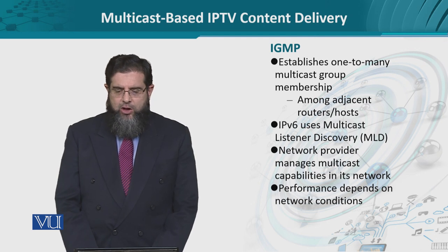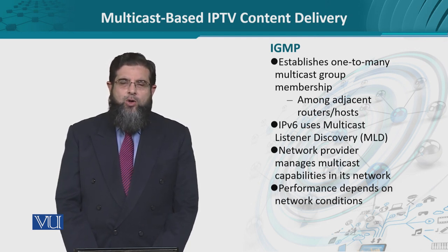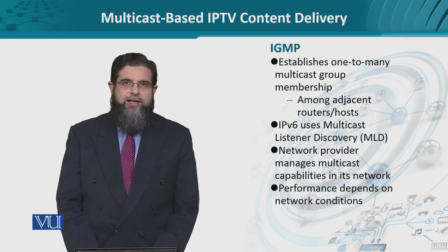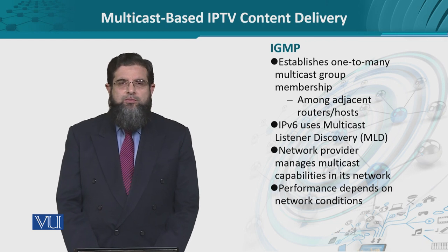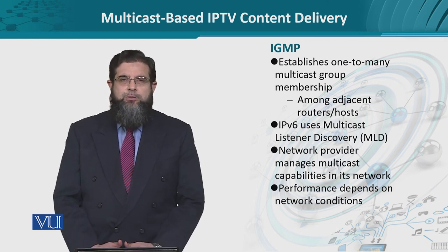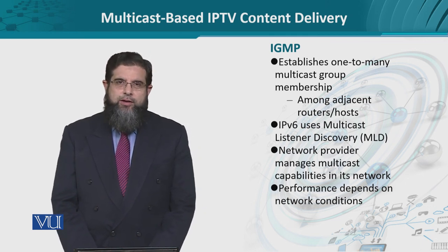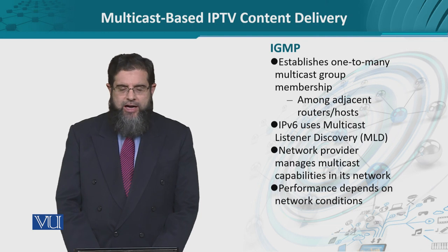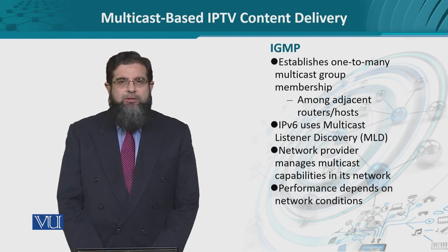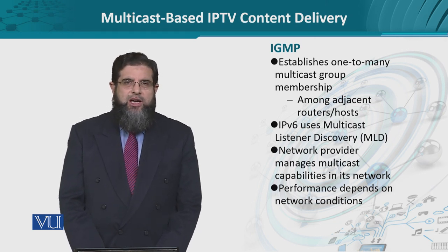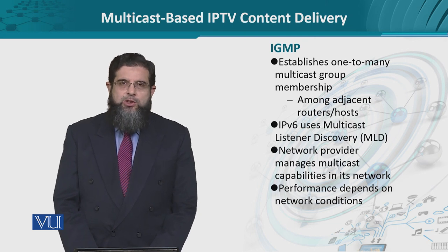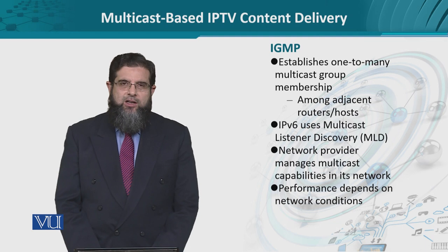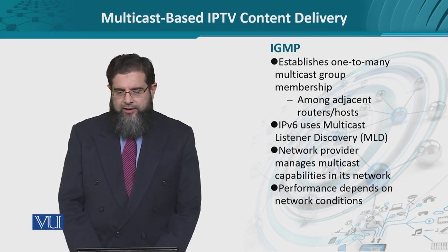IGMP is basically a logical network that overlays on a physical network. This allows membership-based joining of interested users for a certain content into a single group, which could include hosts and routers that are physically spaced apart but form logical adjacency. IPv6 also has an equivalent, since IGMP mostly works for IPv4 — IPv6 uses the Multicast Listener Discovery (MLD) mechanism. It is a listener service that runs on a server, listens to all requests for content, and allows those requesters to join the multicast group.